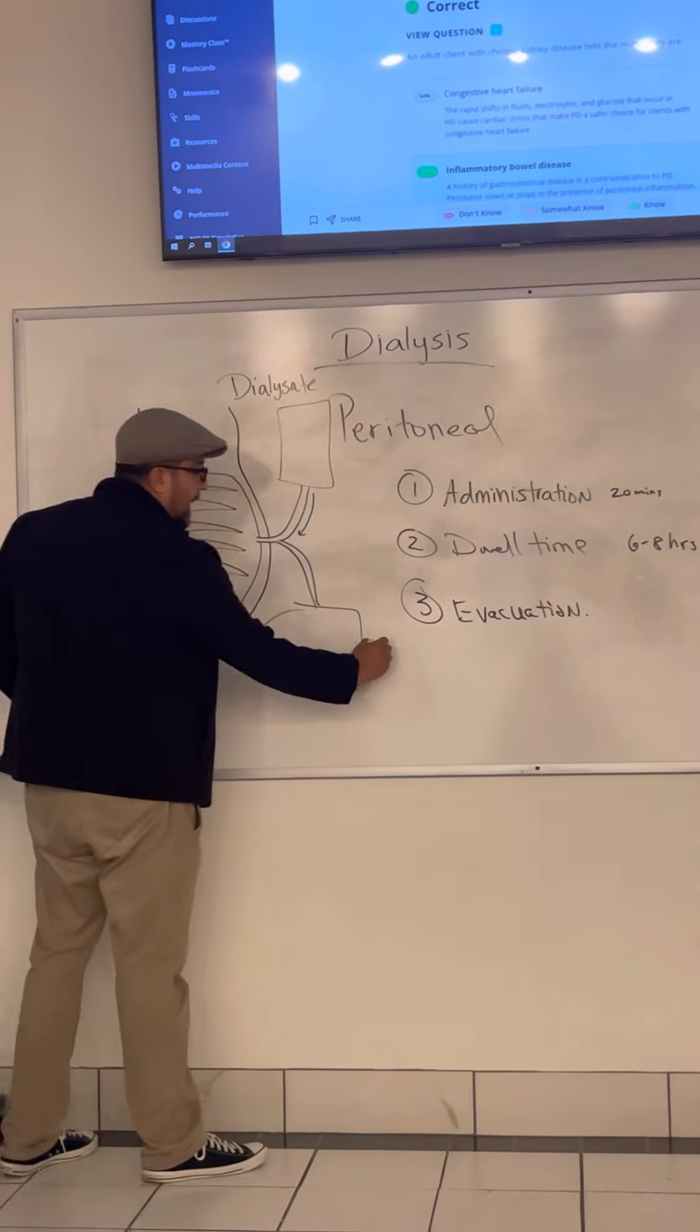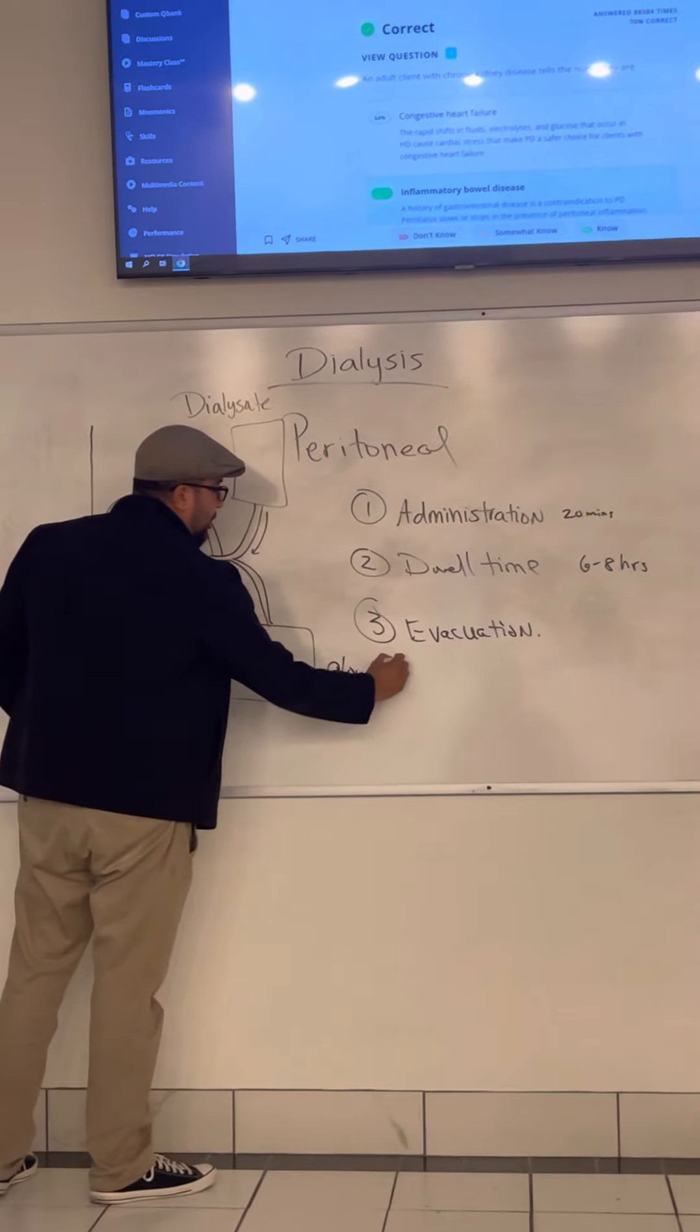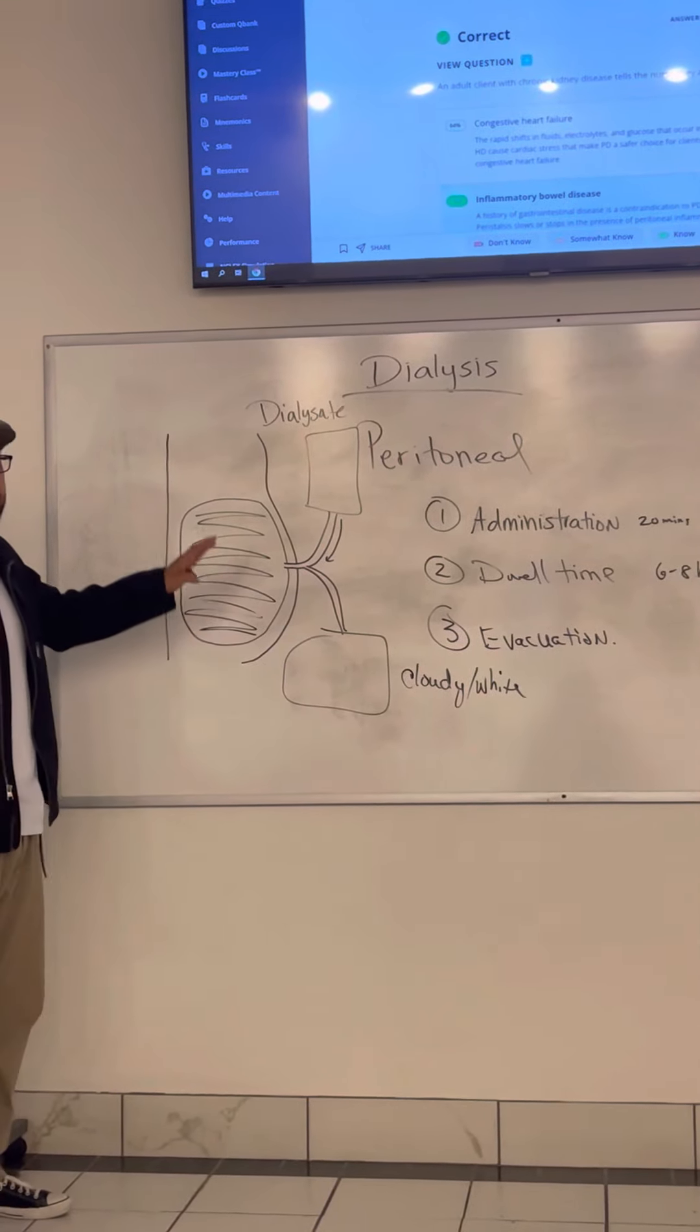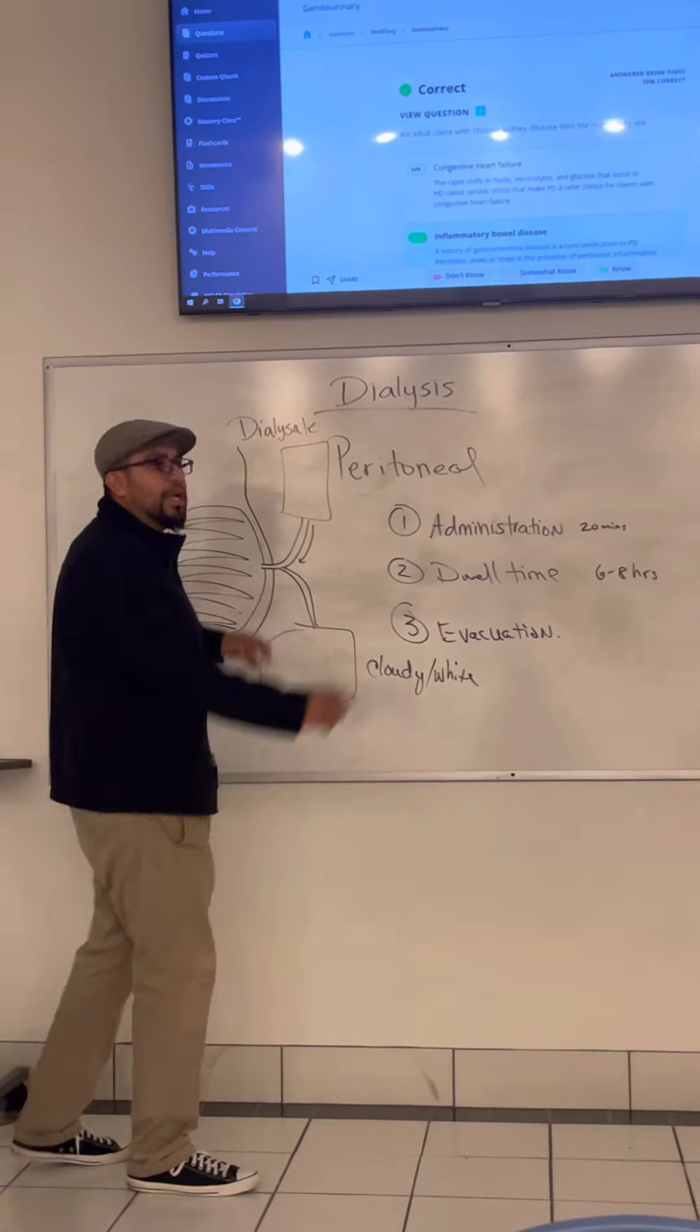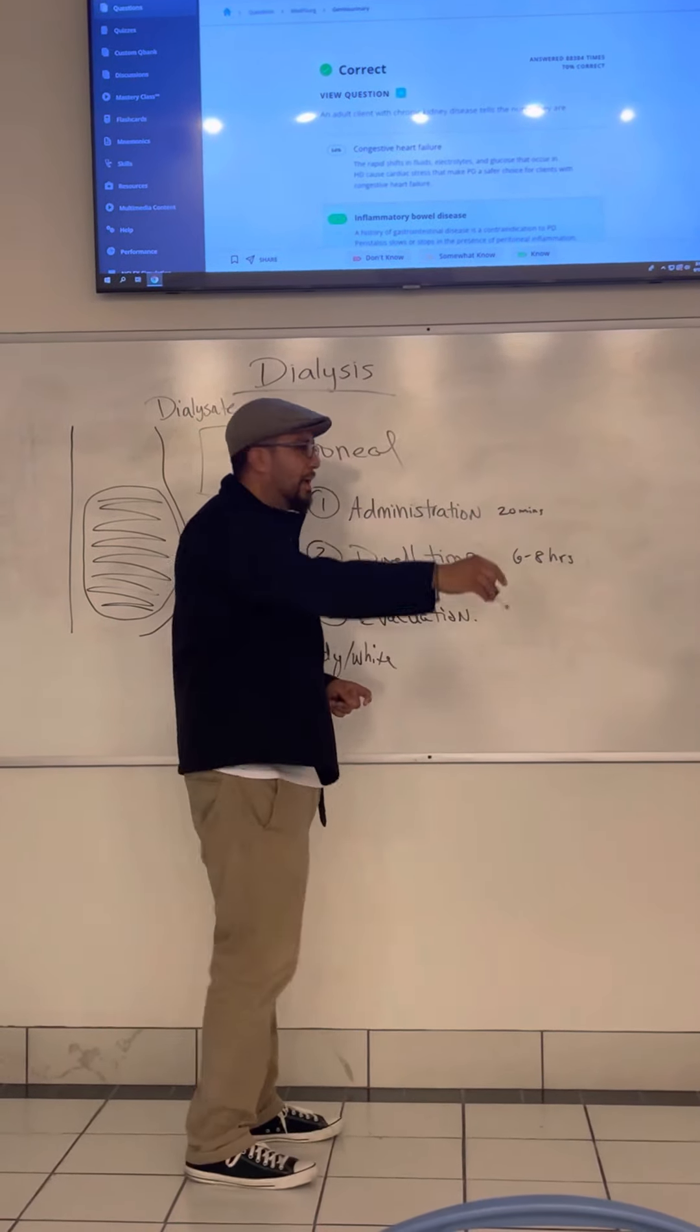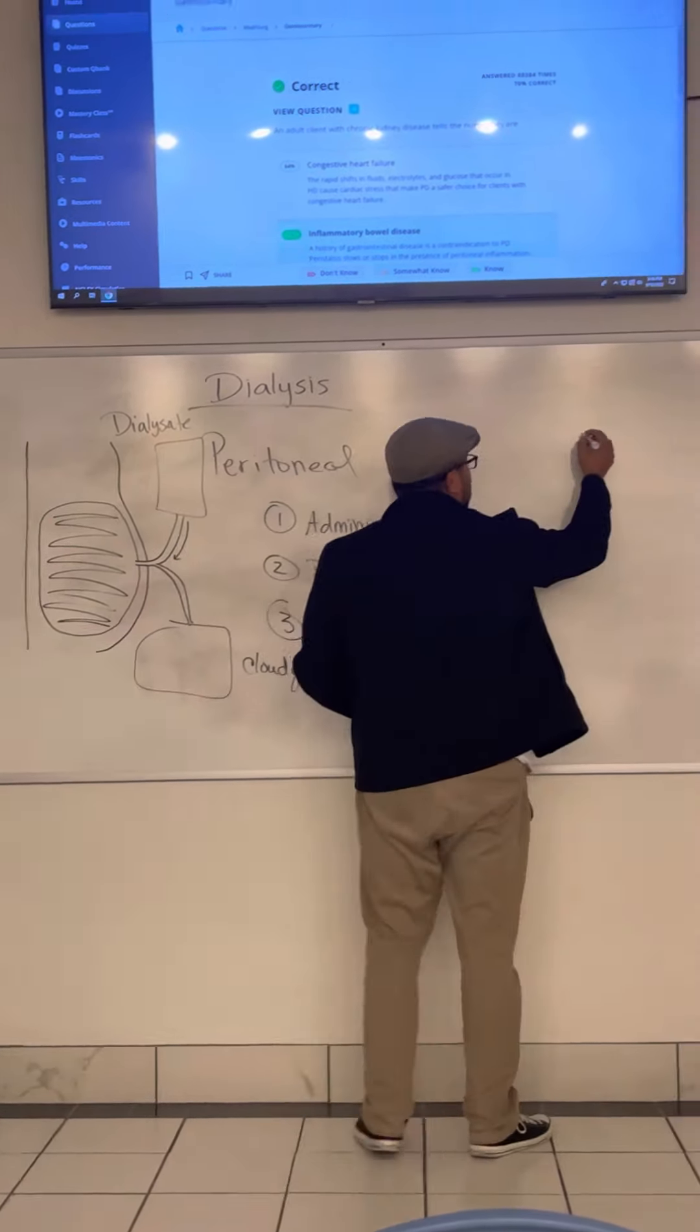And so if it's cloudy or white, you must report it because it indicates the worst thing that's going to happen with peritoneal dialysis. Do you remember talking about peritoneal dialysis? I did talk about it. Anyway.